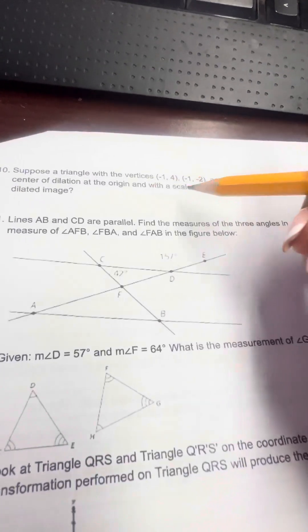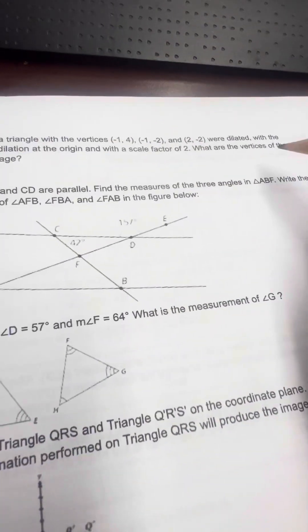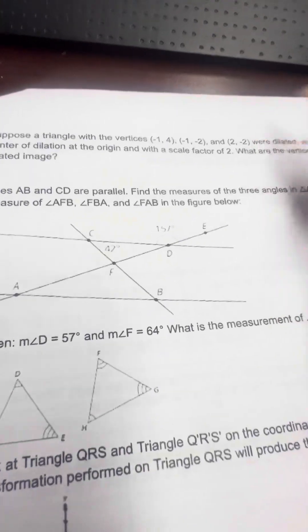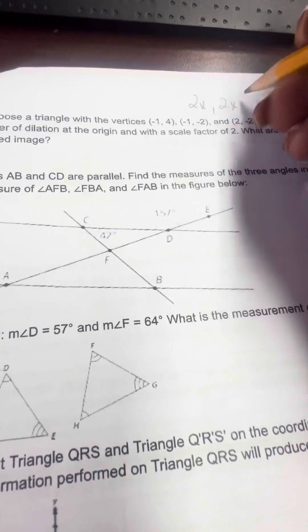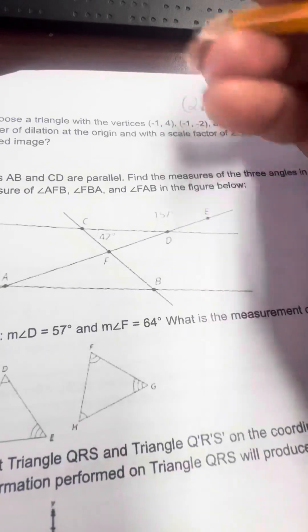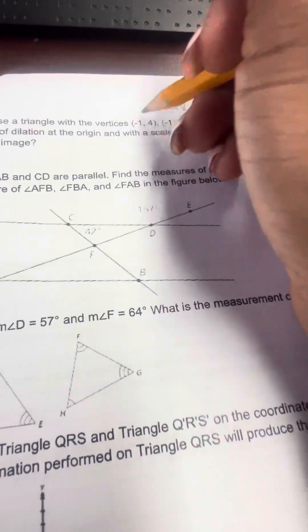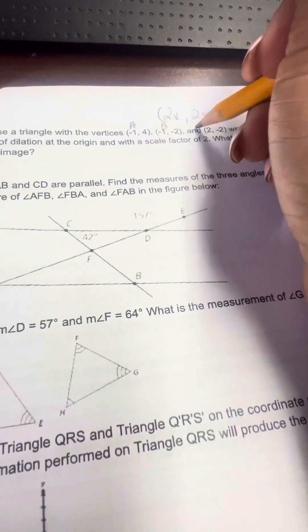Number 10, here you have a triangle with these vertices, and you want the scale factor to be 2. So we're going to multiply each of these coordinates by 2. So this first coordinate, I'm going to label this A, B, and C.